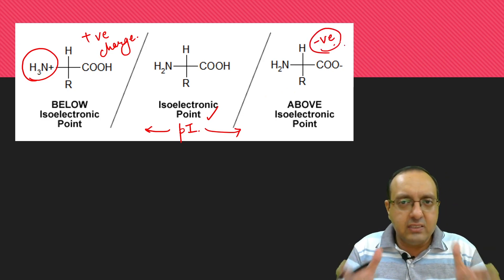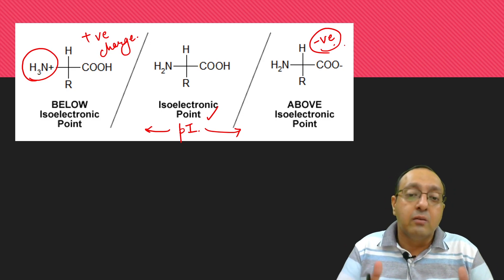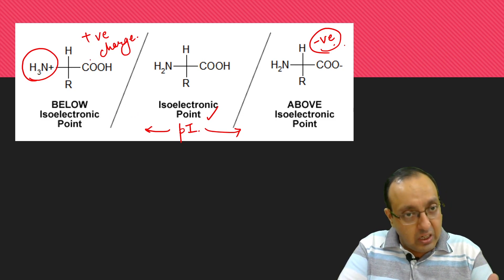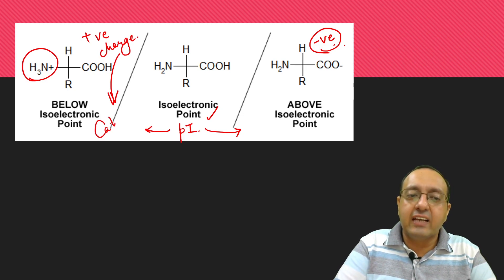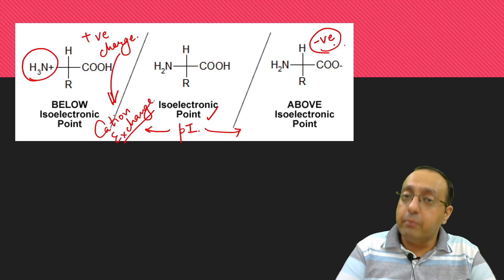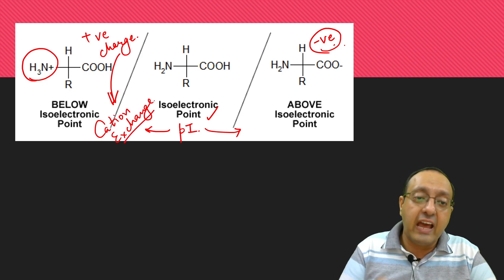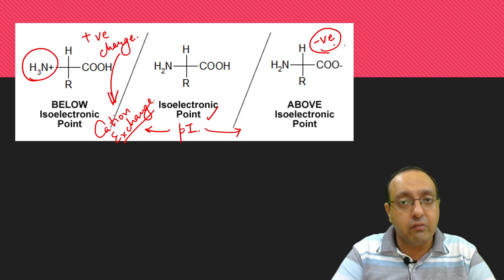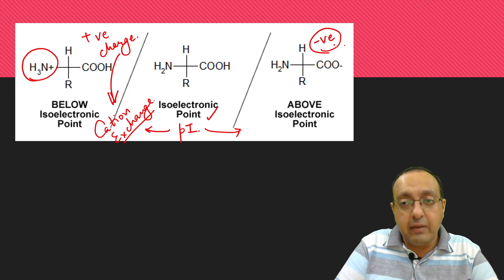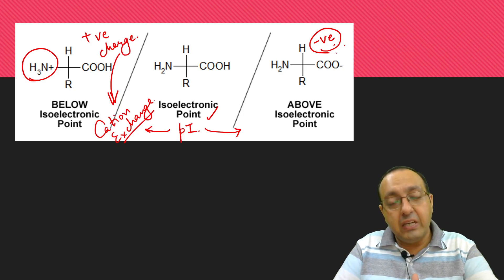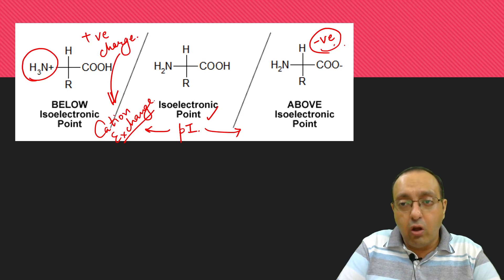Above the pI, if we increase the pH, it will have a net negative charge. You can understand why this is important for our separation, because if we decrease the pH, the protein will have a net positive charge and it will bind to a cation exchange column.